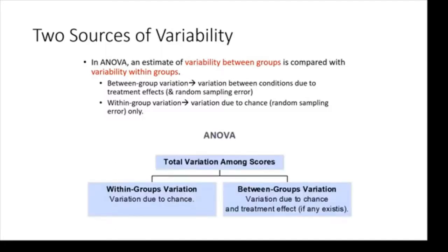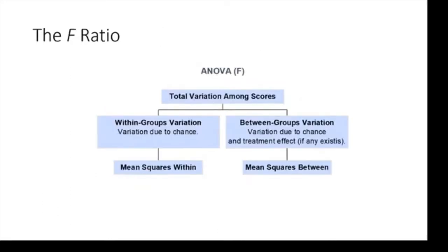So we take that total variability and we split it into two groups: within groups and between groups. And we calculate the sums of squares between, the sums of squares within. And we divide them by their degrees of freedom. And we end up with the mean squared within, the mean squared between.